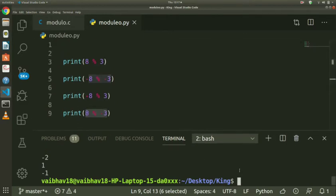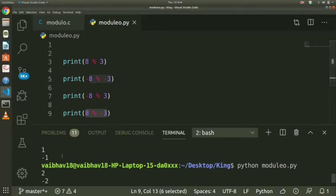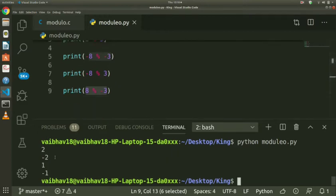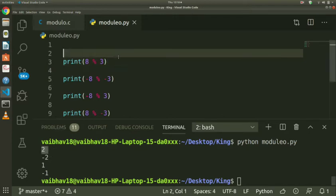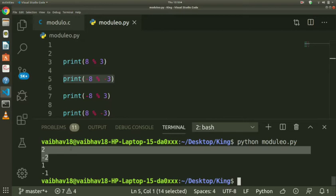I will run this code. For the case where both are positive, the output is 2. We know how the modulus operator works conventionally - this is the C and C++ output for positive numbers. When both are positive, modulus of 8 by 3 is 2, which is correct. Modulus of minus 8 by minus 3 is also correct in Python.